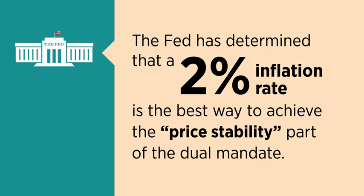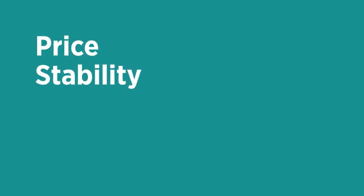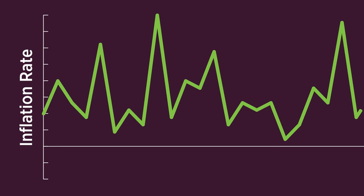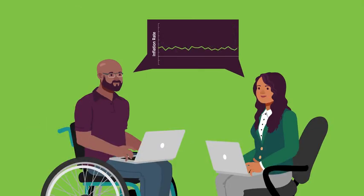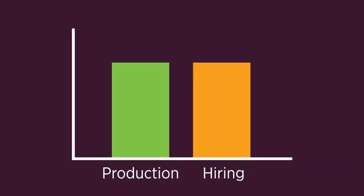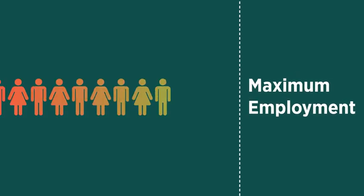As a bonus, when the Federal Reserve achieves the price stability part of its dual mandate, it helps with the other part — maximum employment. High and volatile inflation can make it difficult for businesses and consumers to plan their future spending. In contrast, when there is price stability, businesses and consumers can invest and spend with confidence. When they spend and invest more, more goods and services are produced and more workers are hired, moving the economy towards maximum employment. Overall, the dual mandate supports a healthy economy, and the Federal Reserve tries to make sure the inflation rate stays just right.